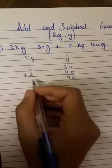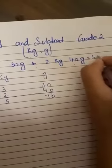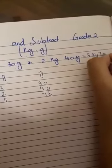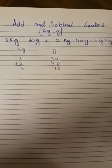And 2 plus 3 is 5, so the answer is 5 kgs and 70 grams. This is how we are going to add and subtract kilograms and grams.